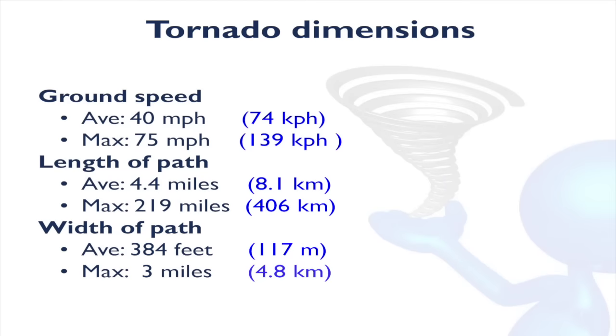There are several different patterns for tornado dimensions. Ground speeds: the average tornado ground speed is about 40 miles per hour, and usually a maximum that has been measured is 75 miles per hour. That's a good indicator for what we'd expect to be the average and the max.